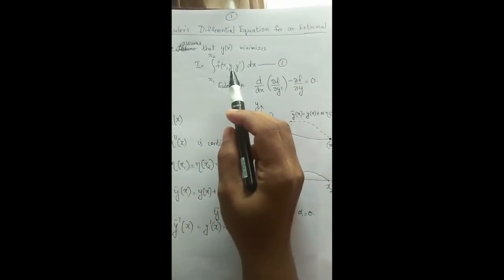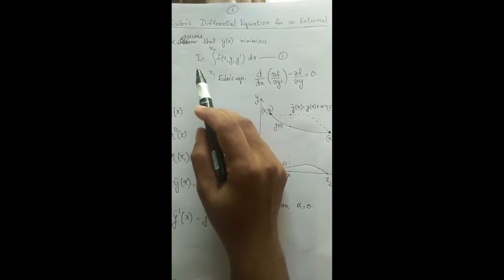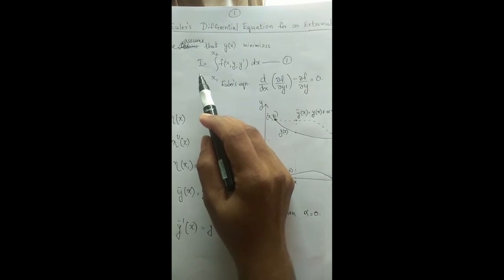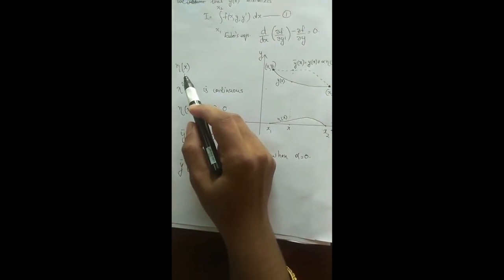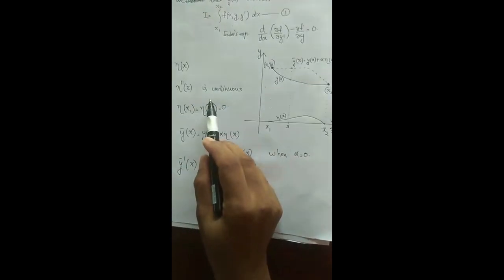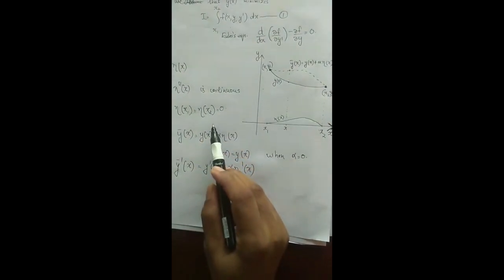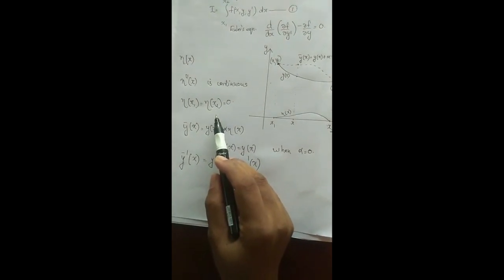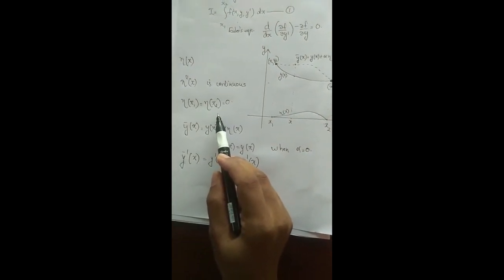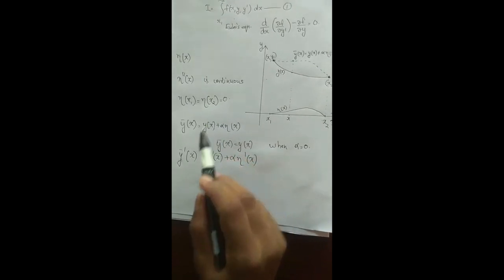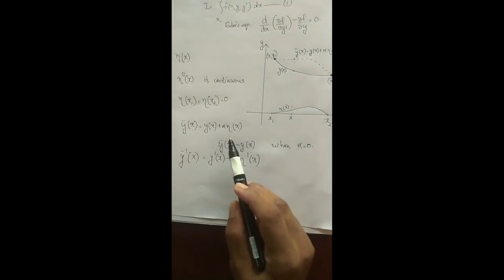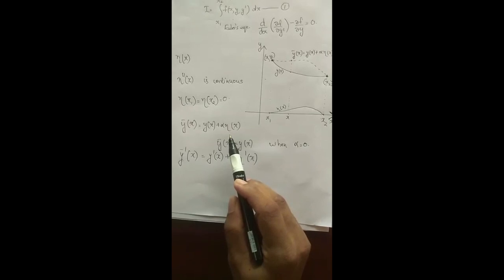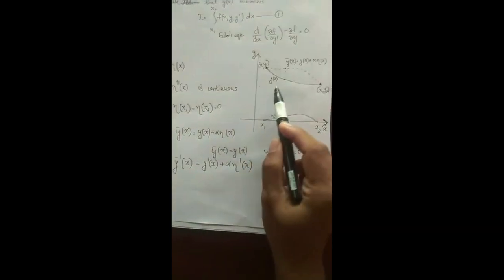Since we have assumed that y(x) gives the minimum value to the integral I, I will increase if we disturb y(x) slightly. To construct these disturbed functions, let η(x) be any function such that η''(x) is continuous and η(x1) = η(x2) = 0. If α is a small parameter, then ȳ(x) = y(x) + α·η(x) represents a one-parameter family of admissible functions. Consider this figure.